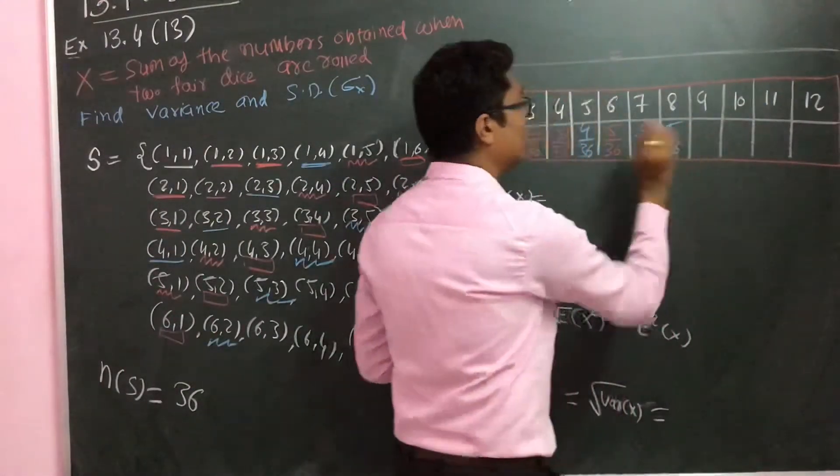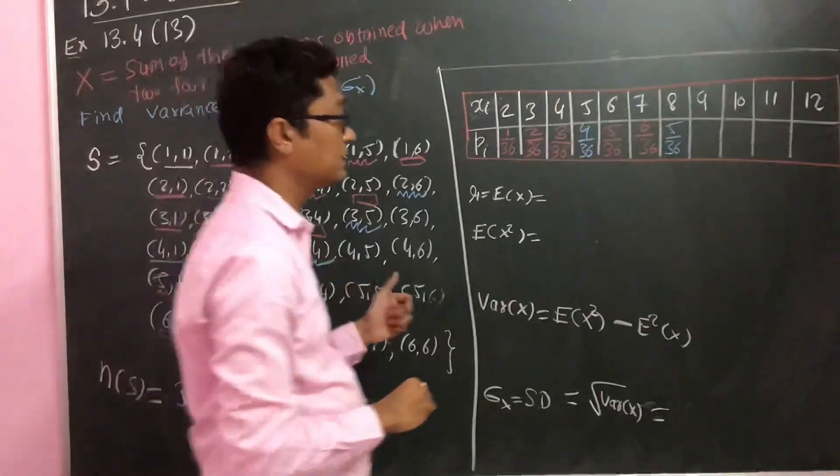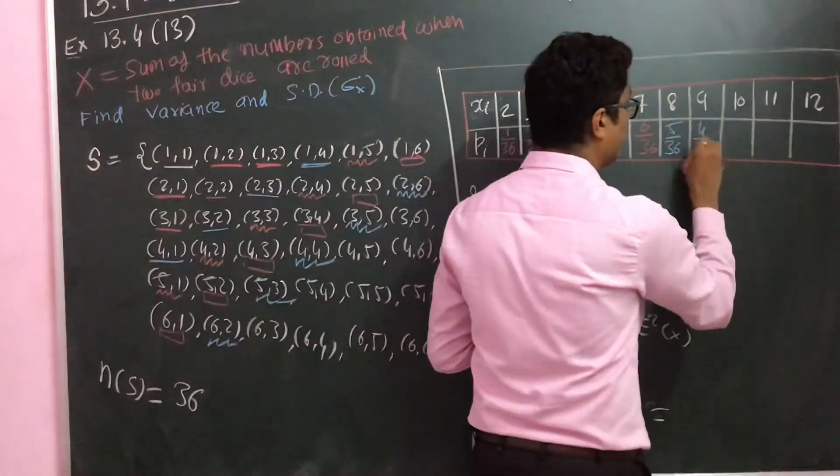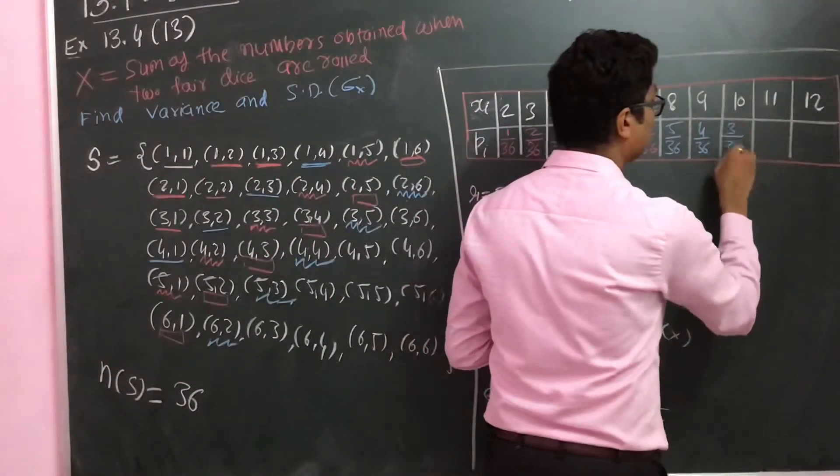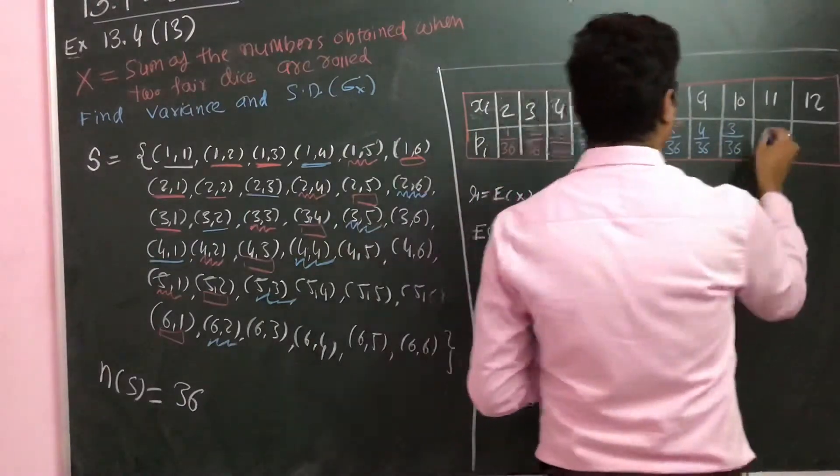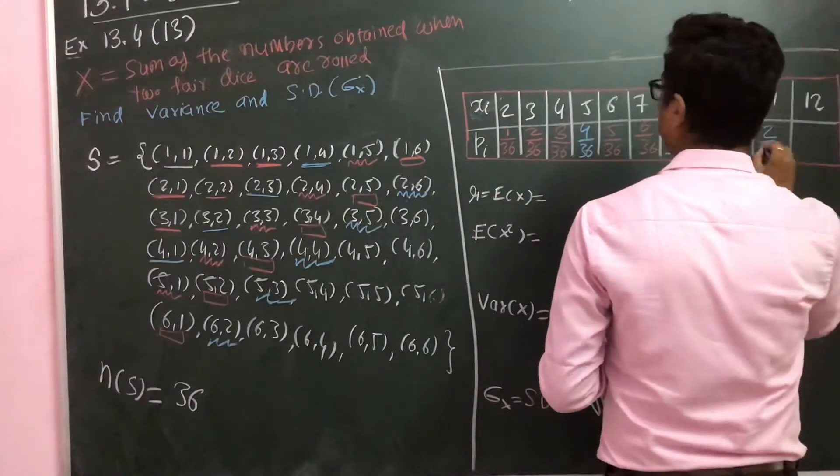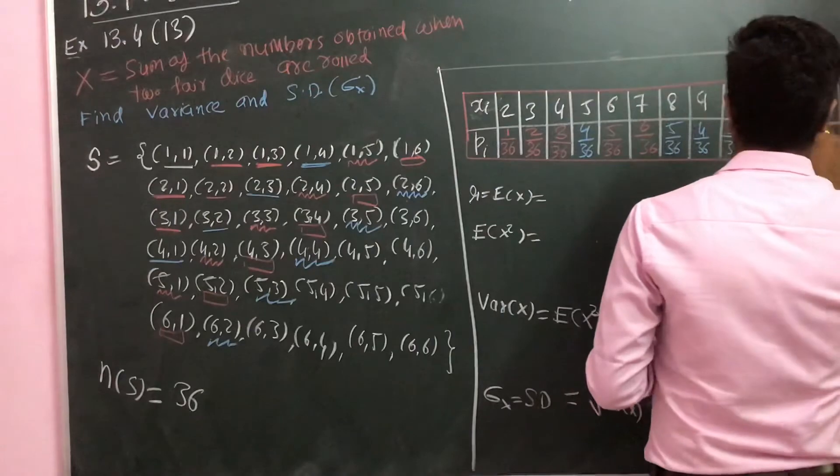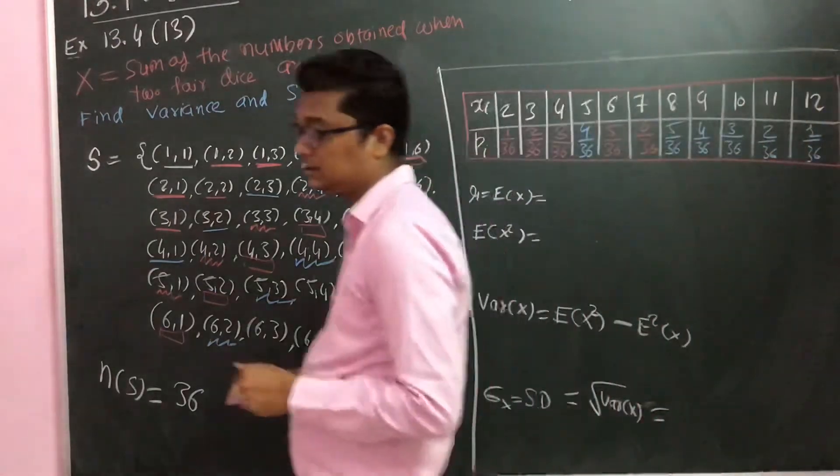Similarly, you can do for other combinations. For 9 it will be 4 by 36, for 10 it's 3 by 36, for 11 it's 2 by 36, and for 12 it's 1 by 36.